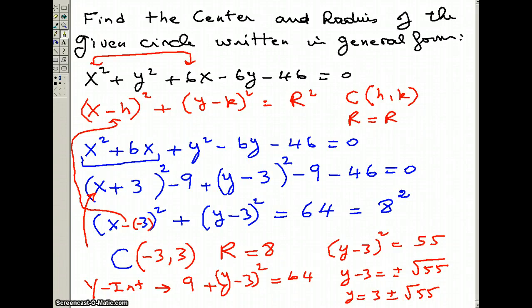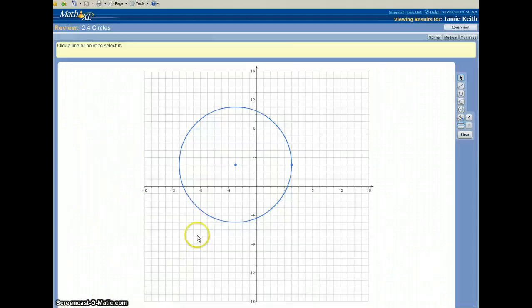Let's go back to the graph. We have 3 plus square root of 55, and we have 3 minus square root of 55. That would be the y-intercepts.